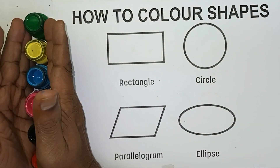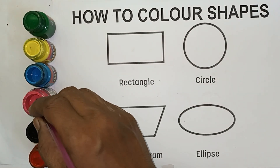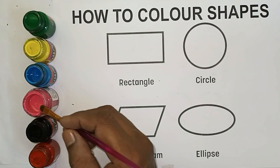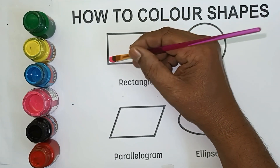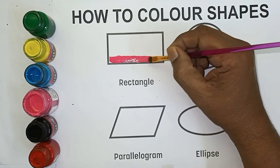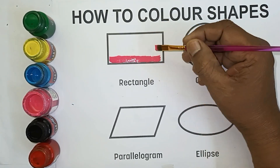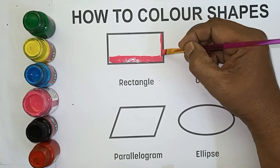How to color? Save. Rectangle, save, pink color. Rectangle shape, rectangle.